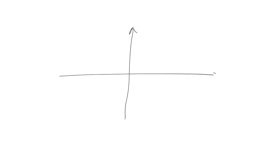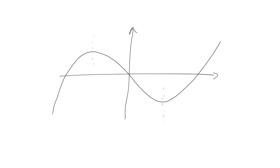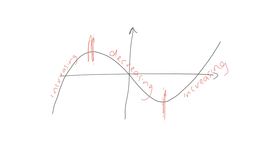Just to remind you of something we looked at when we looked at sketching graphs — you might be asked about where the graph is increasing and decreasing. Mark on where our maximum and minimums are. Before the maximum, this is where the graph is increasing. Then between this point and this point, this is where it's decreasing. And then after this point, it's increasing again.